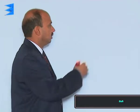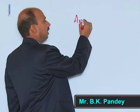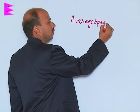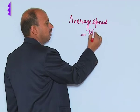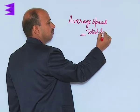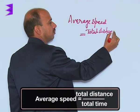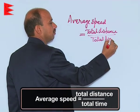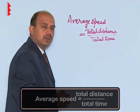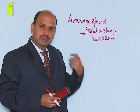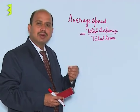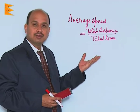Now we will discuss average speed and average velocity. Average speed is equal to total distance divided by total time taken — that means the total distance travelled or the total length of the path covered, divided by total time taken. That is called average speed.